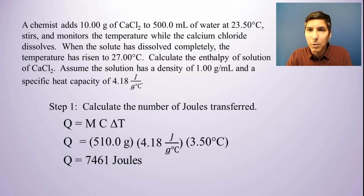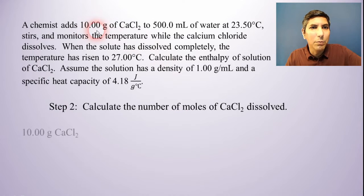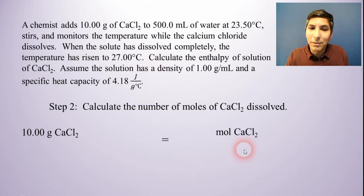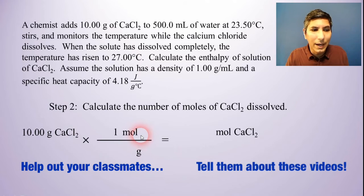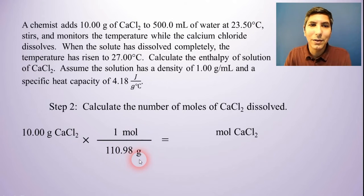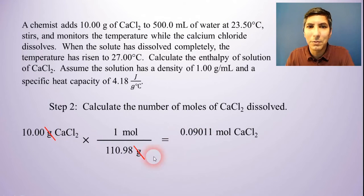We're going to set that aside for a minute. We have our joules and now we're going to think about the moles. That's our second step. We're going to find the moles of calcium chloride dissolved. That's a simple calculation because it tells us we started with 10.00 grams of calcium chloride. All we have to do is convert that to moles. In our conversion factor, grams on bottom, 1 mole on top, and we consult the periodic table once again, and it's about 110.98 grams in a mole of calcium chloride. Now I can cancel grams and divide, and it's about 0.09011 moles of calcium chloride.